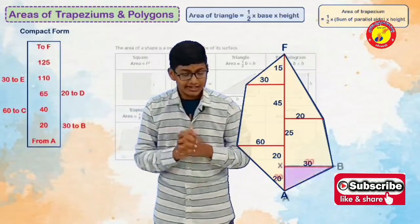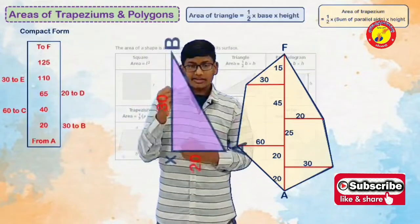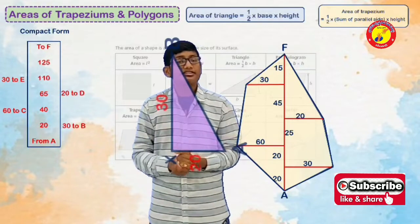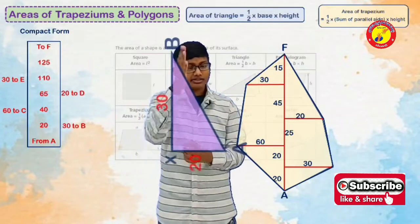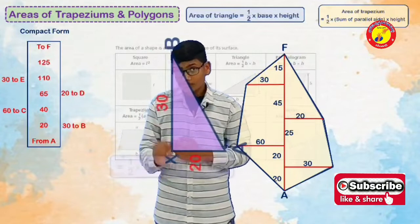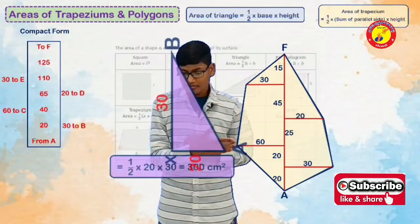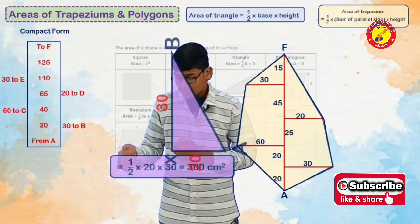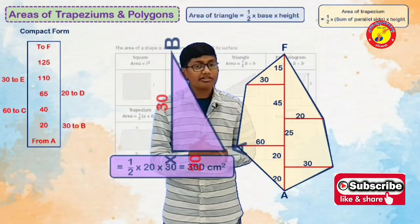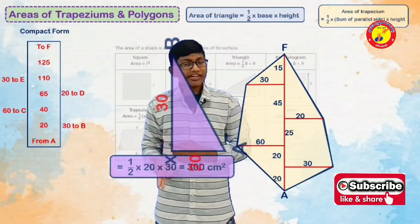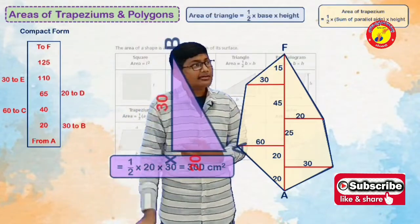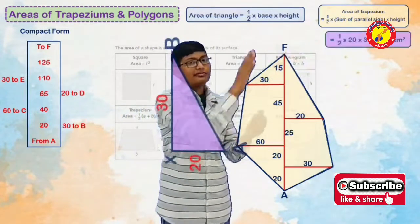First we go for the triangles. Here I have the triangle with base 20 cm and height 30 cm. If we calculate half into base into height, we will get half into 20 into 30. After calculation, we will get 300 cm square.